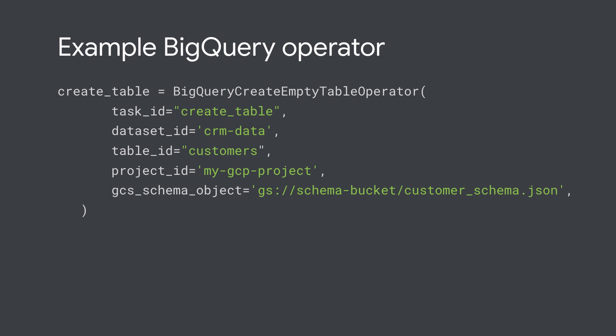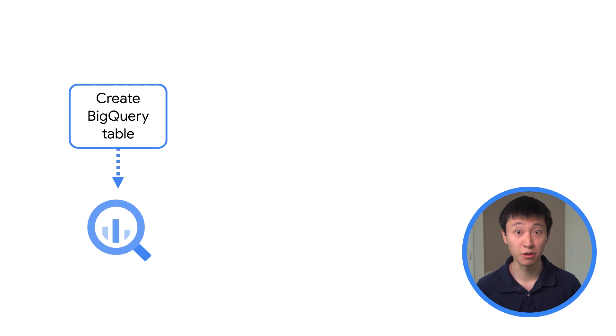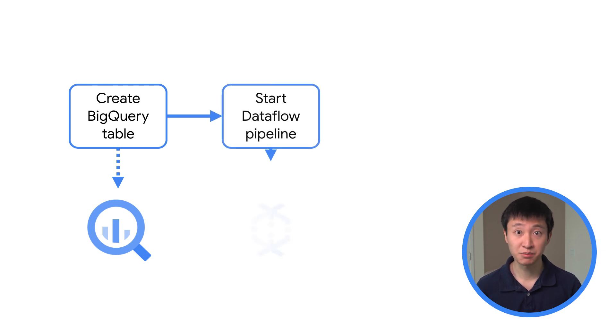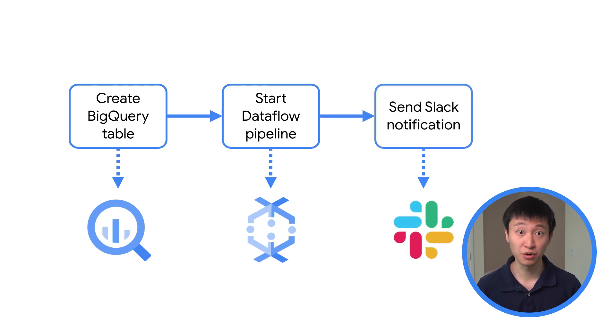Operators allow you to communicate with services across multiple cloud environments and on-prem. In addition to many operators in the Apache Airflow ecosystem, there are over 150 operators for Google Cloud alone. For example, your Composer workflow might start by triggering a data ingestion job in BigQuery, then start a batch processing Dataflow pipeline, and finally send a Slack notification to teammates that the data processing workload has finished.